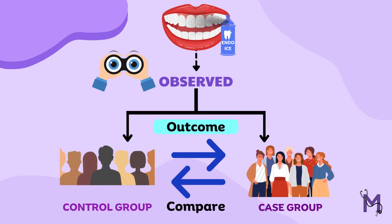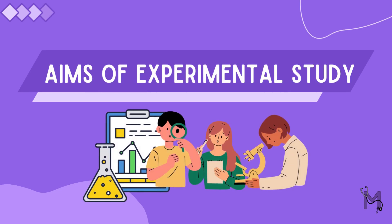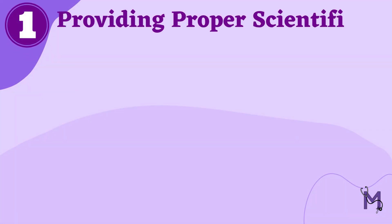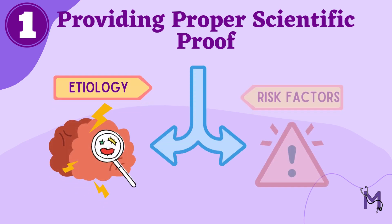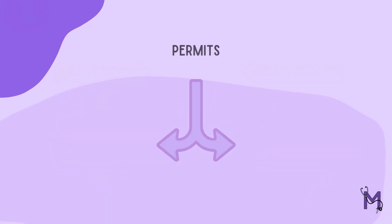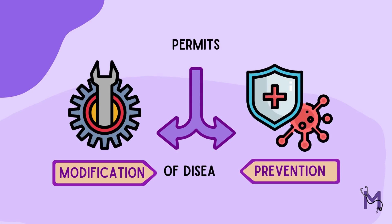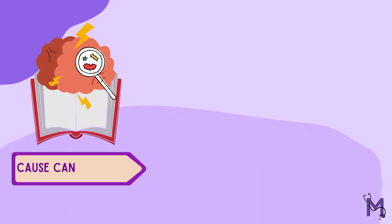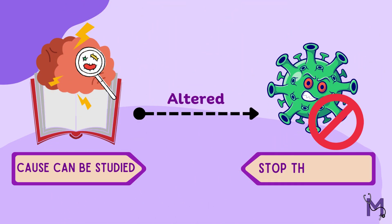Let's first understand the aims of experimental studies. Firstly, it aims at providing proper scientific proof of the etiologic or risk factors, which may then permit the modification or prevention of those diseases. This means that the causative factor of the disease is studied, which can then be altered to stop the disease from occurring.